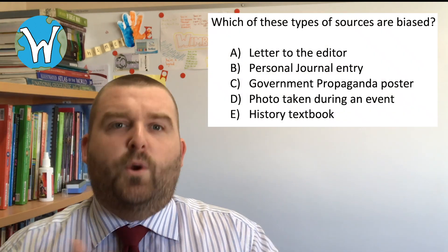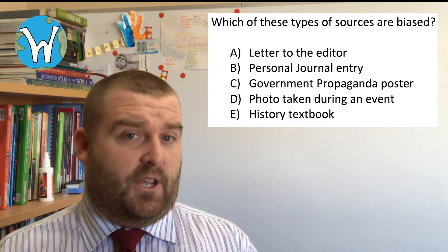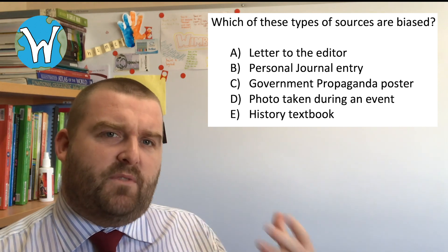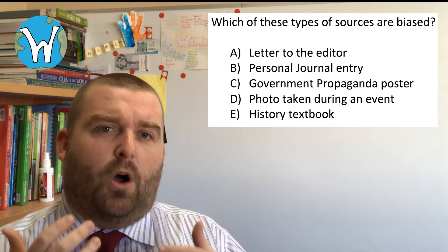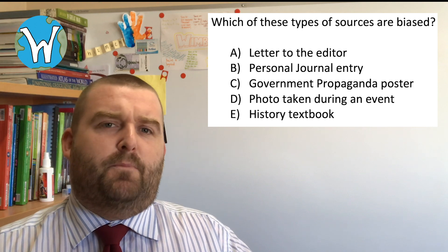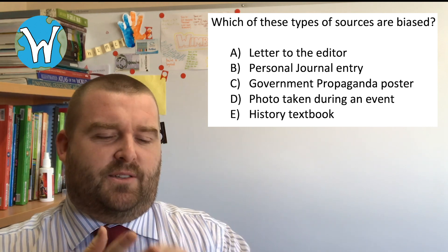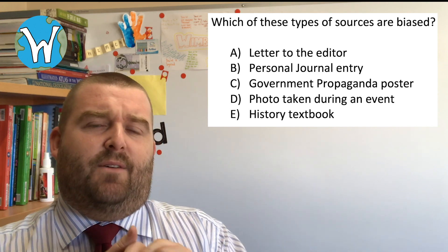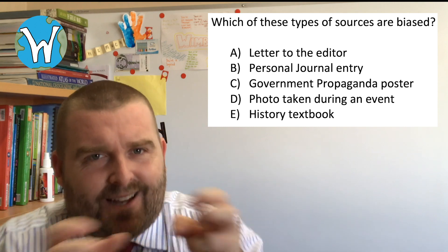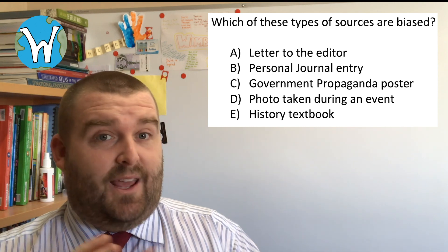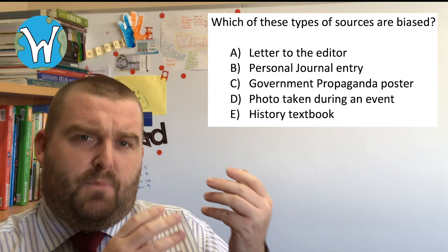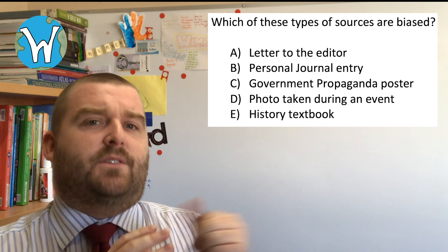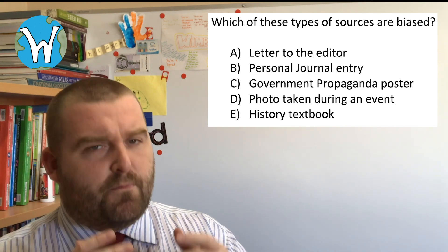Here's an example: the hinge question is 'Which of these types of sources are biased?' This is for history. I discussed it with a colleague who was not a history teacher, so I had to explain a lot about bias. The point of this hinge question is that bias is very complicated — students often have misconceptions about it. They either think bias has to be intentional, or they conflate bias with authenticity and reliability, saying things like 'this is a primary source therefore it's biased therefore it's unreliable.' The answer is that A, B, C, D, and E are all correct — bias is in everything.